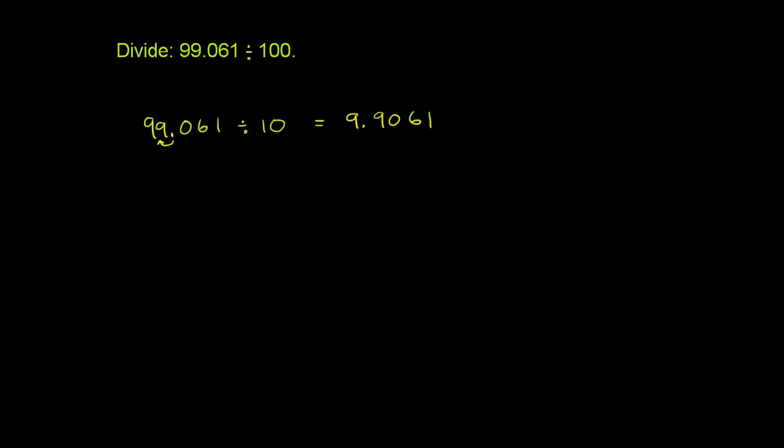If we divide 99.061 by 100, which is the focus of this problem, we move the decimal place twice. If we move it once to the left, we're dividing by 10. To divide by 100, we divide by 10 again, so we move it over twice: 1, 2 times.